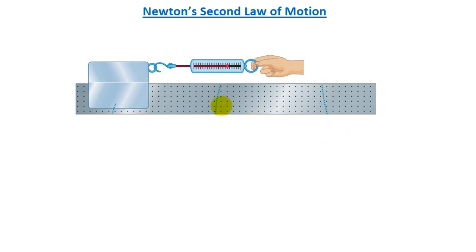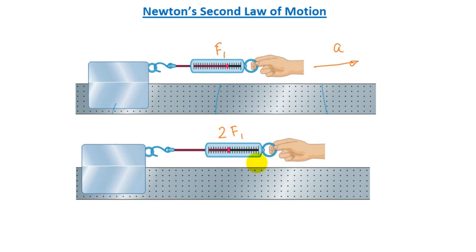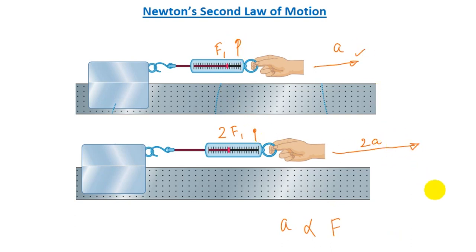Attach the air track with a spring scale and pull it with a force F1. We observe the cart accelerates with acceleration a. Now repeat with twice the force — two times F1 — and we observe the acceleration becomes two times a. From this we conclude that acceleration is proportional to force.